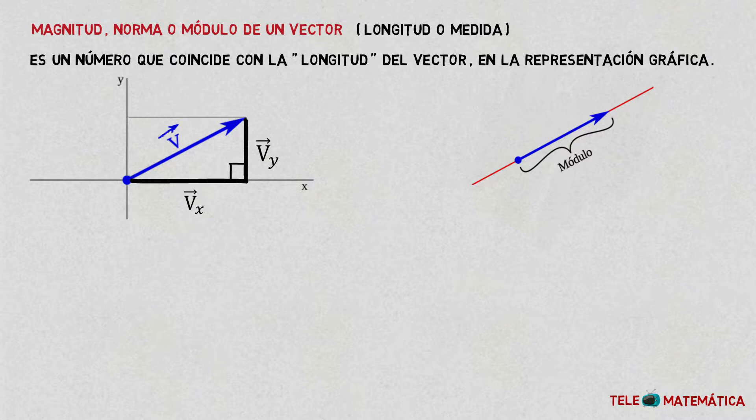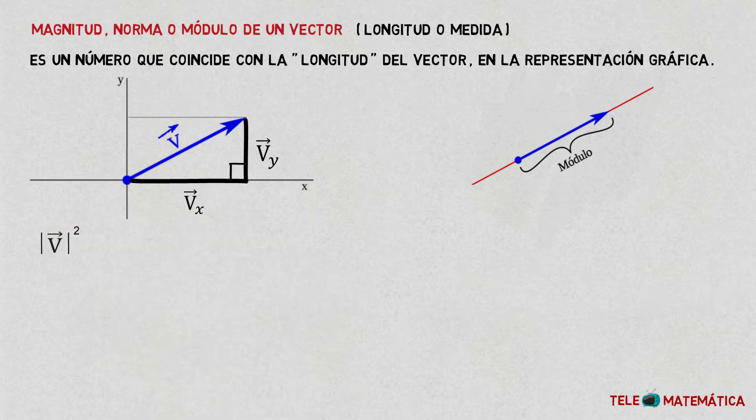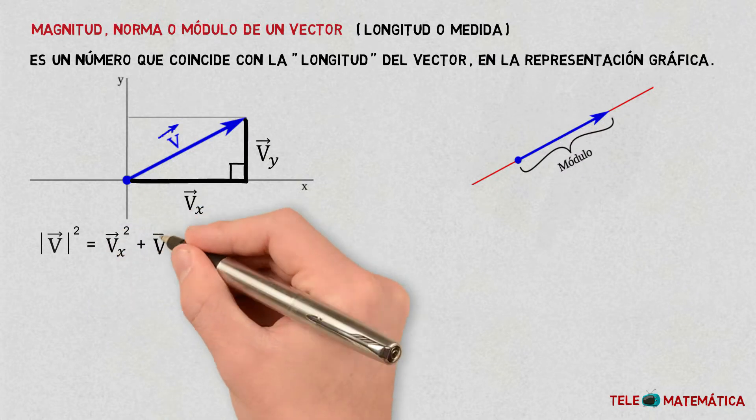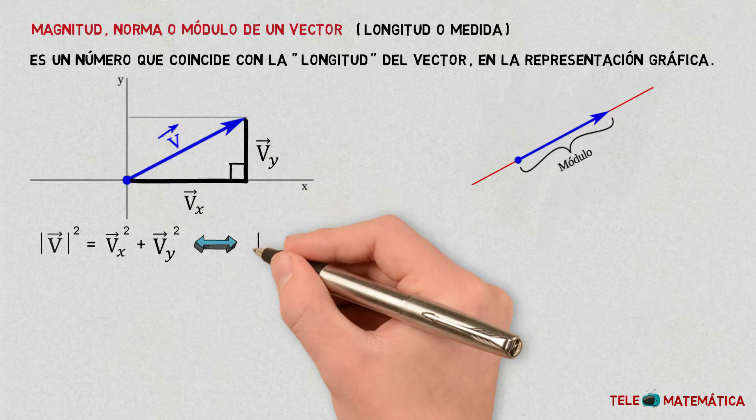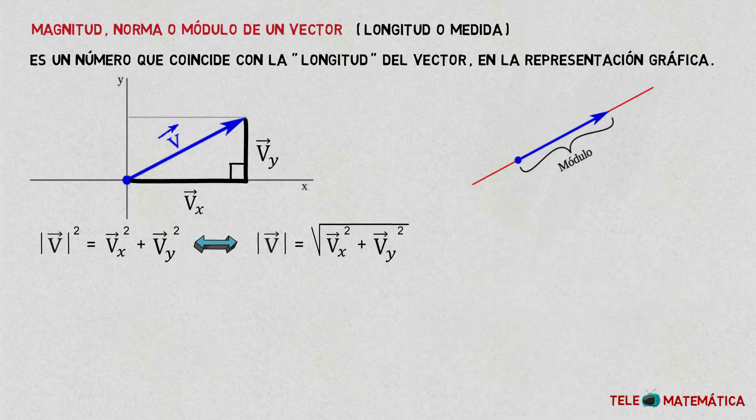Using it, we would have |V| squared is equal to the component X squared plus the component Y squared. We can understand the length of a vector will be equal to the square root of the component X of the vector squared plus the component Y of the vector squared.